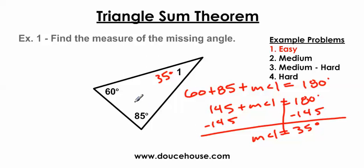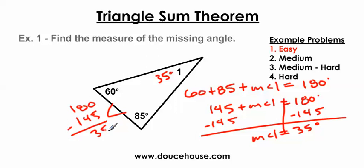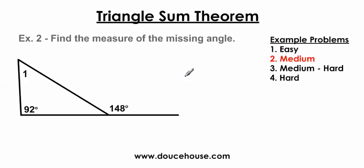There's a shortcut: you can just add the two known angles — that gives me 145 — then subtract from 180, and you still get 35 degrees. Whatever makes you happy. The long way is how I grew up doing it and how I show my students. Now I'm going to move on to a problem that's a little bit more challenging.